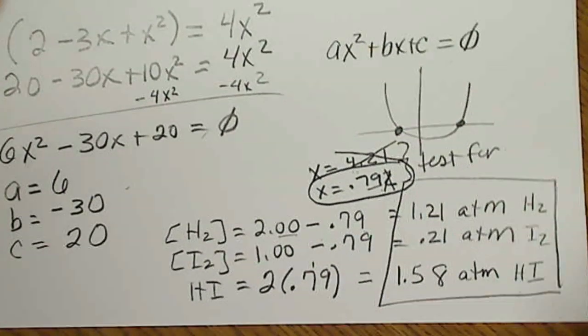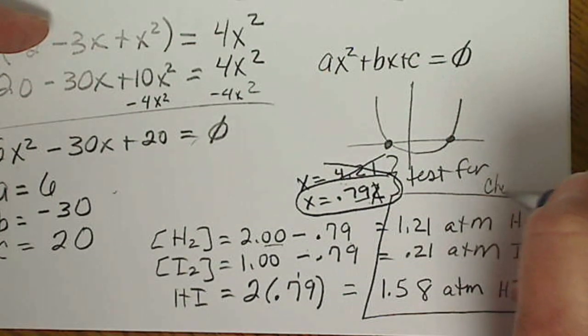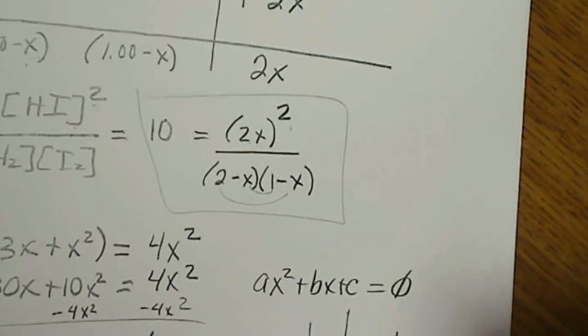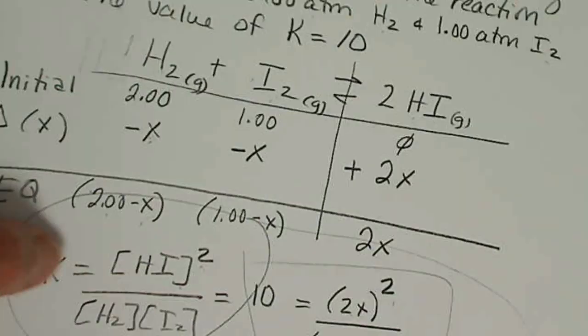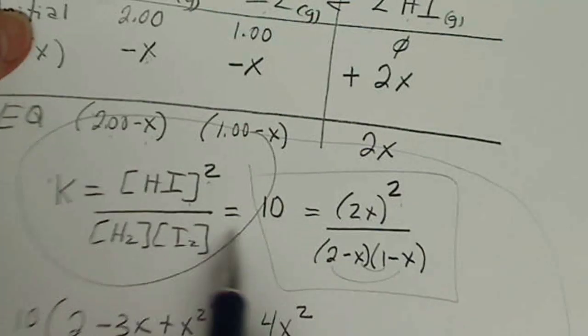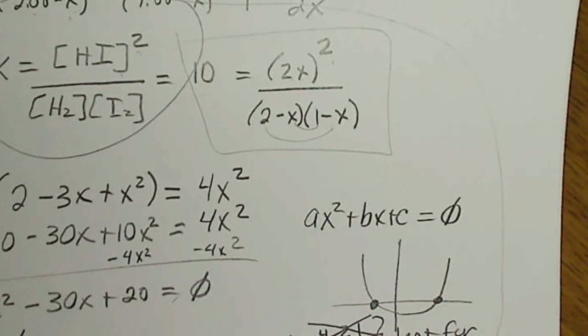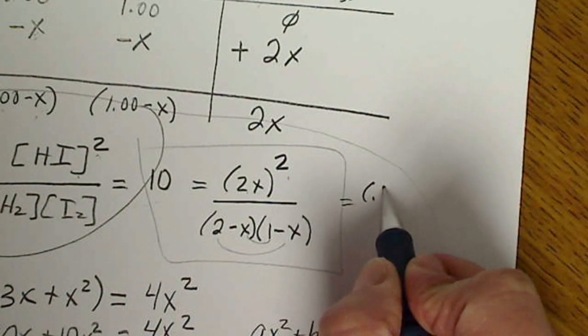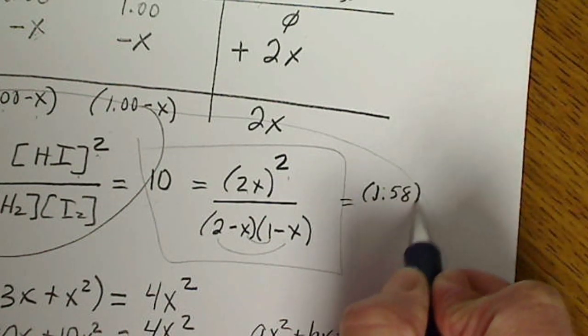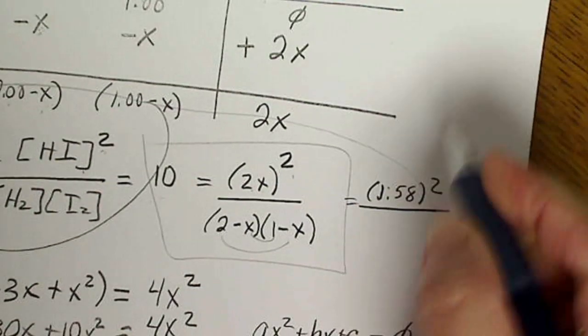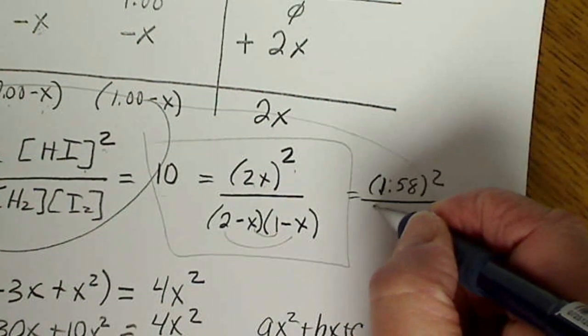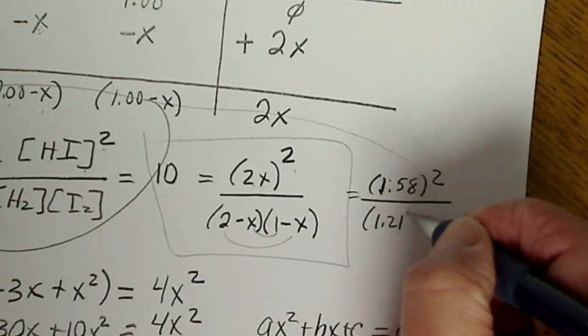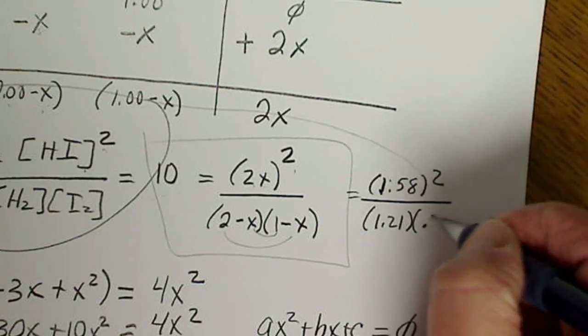And our final answer to have our three equilibrium values make sense, we should be able to plug these back in and check for this. It's always the case for algebra. If we plug these values back into this equilibrium expression, then we should get 10 as our answer. So we could do that: 1.58 squared, that was our HI.